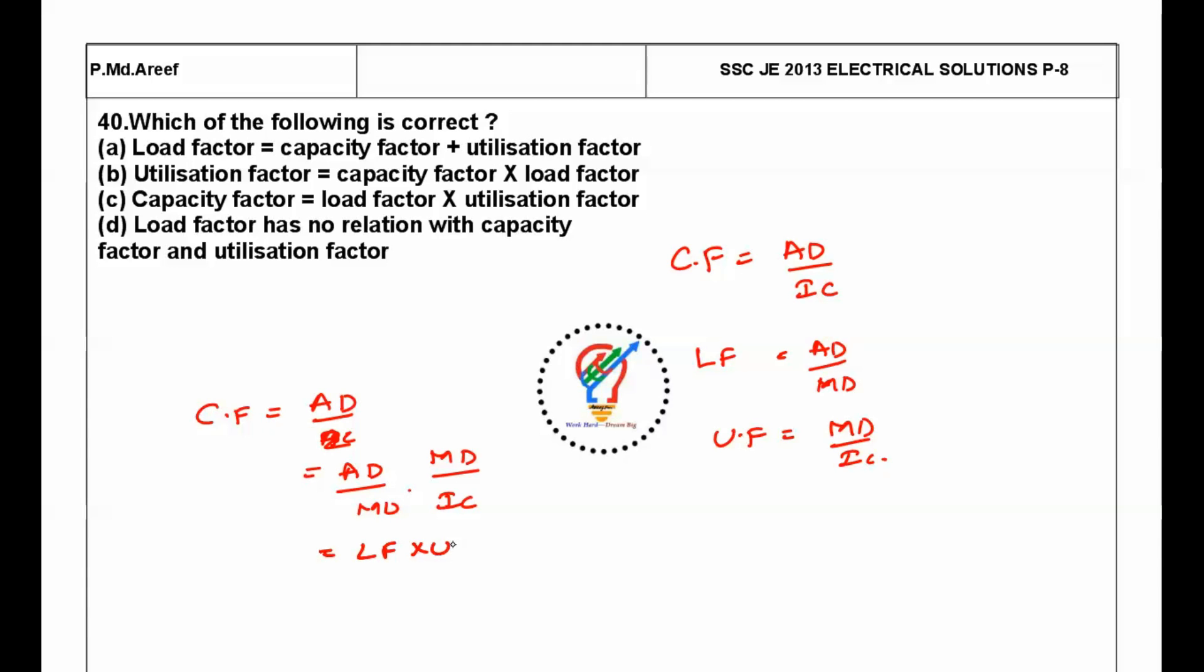What is AD by MD? It's load factor times utilization factor. The answer is C here. Thank you friends, thanks for watching my video. Will continue next session.